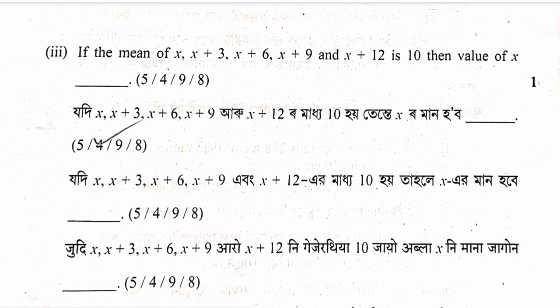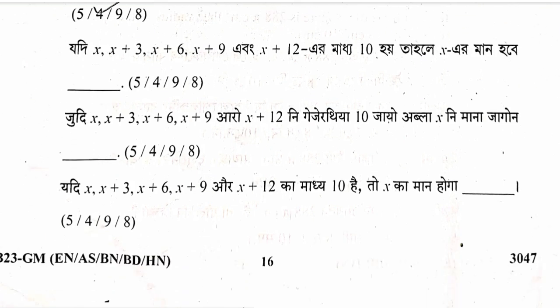Question: If the mean of the data 2, 3, 4, 5, and x is 10, then find the value of x. Setting up the equation: sum of all values divided by 5 equals 10, solving for x gives the answer.